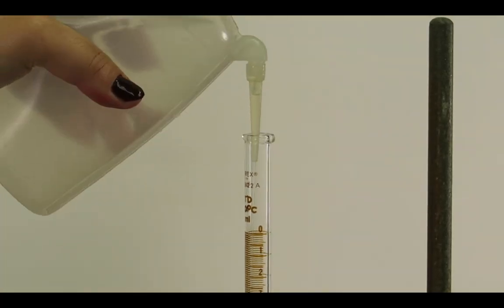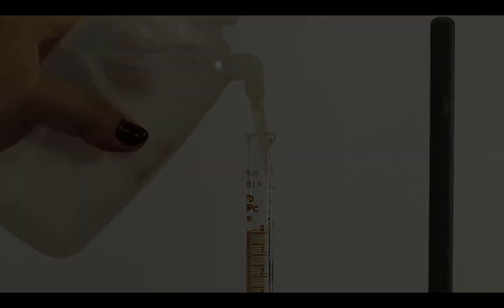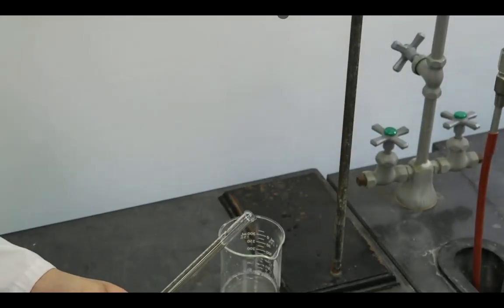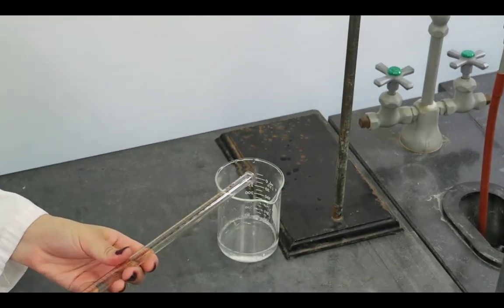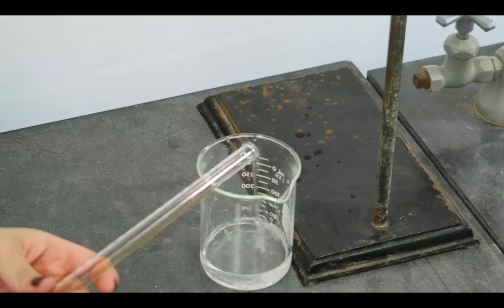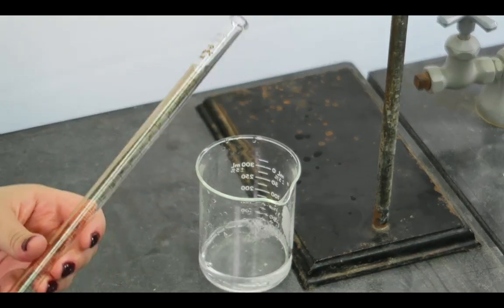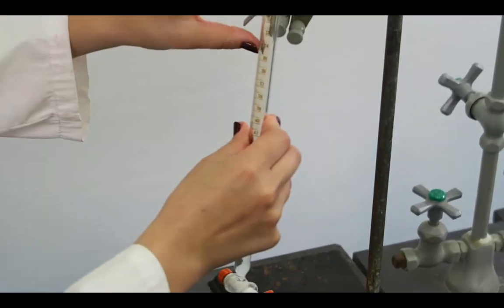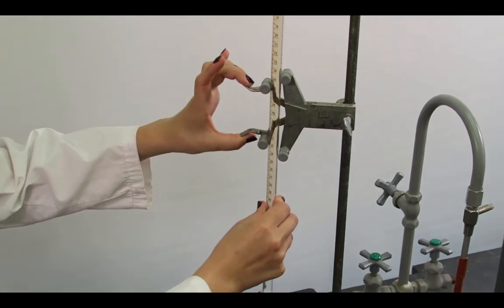Fill the burette partially with deionized water and roll while holding horizontally to rinse. Pour a portion of the rinsings out the top of the burette. Clamp the burette to the stand and allow the remaining water to drain through the stopcock.